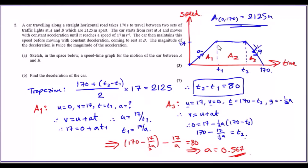The total distance is 2,125 meters. The car starts from rest at A, so initial speed is zero, and moves with constant acceleration until it reaches a speed of 17 m/s — up this slope on the graph until it hits 17. Mark that time as T1. The car then maintains that speed for a certain period of time, up to T2.